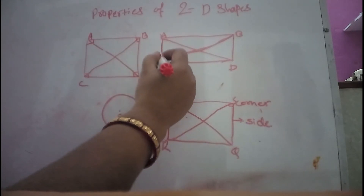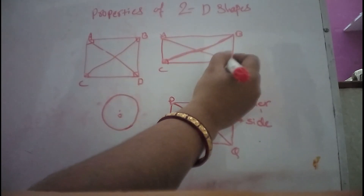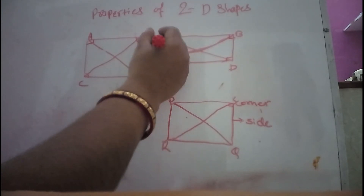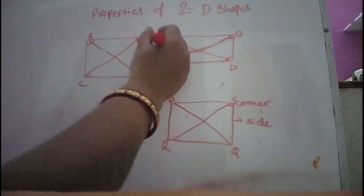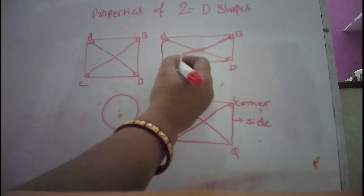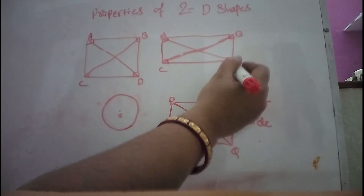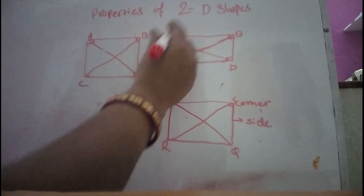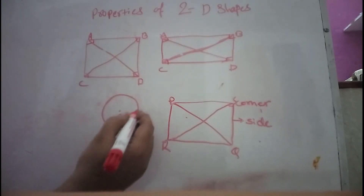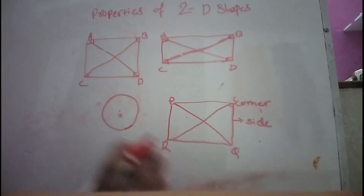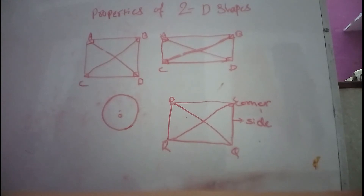In this rectangle figure, we have corners here. These are diagonals: AD, CB, CD, DB, BA and AC. In the circle, there are no straight lines, no corners and no diagonals.